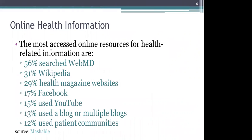The most accessed online resources for health-related information are: 56% of persons go to WebMD, 31% goes to Wikipedia, 29% refers to health magazine websites like Self, 72% relies on Facebook, and 15% on YouTube, blogs, and patient communities. A lot of persons do go online for health information — we just want to make sure that the information they're provided when they search is accurate.